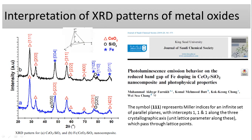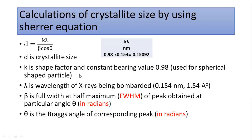This is one of my own papers with my students, and you can go through it to get further explanation of the interpretation of the XRD pattern. The second and most important objective of the lecture is to calculate the crystallite size by using the Scherrer equation. In a previous lecture I already explained the interplanar distance using the Bragg equation. Here I am going to explain the crystallite size, because in nanomaterials we use the Scherrer equation to calculate the crystallite size from the XRD pattern.